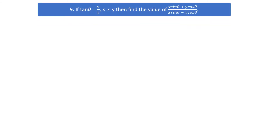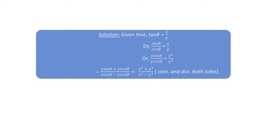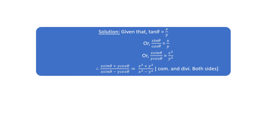Question number 9. If tan θ equals x by y, where x not equal to y, then find the value of x sin θ plus y cos θ by x sin θ minus y cos θ. Solution: given tan θ equals x by y, and tan θ equals sin θ by cos θ equals x by y. Applying componendo and dividendo to both sides gives x² plus y² by x² minus y².